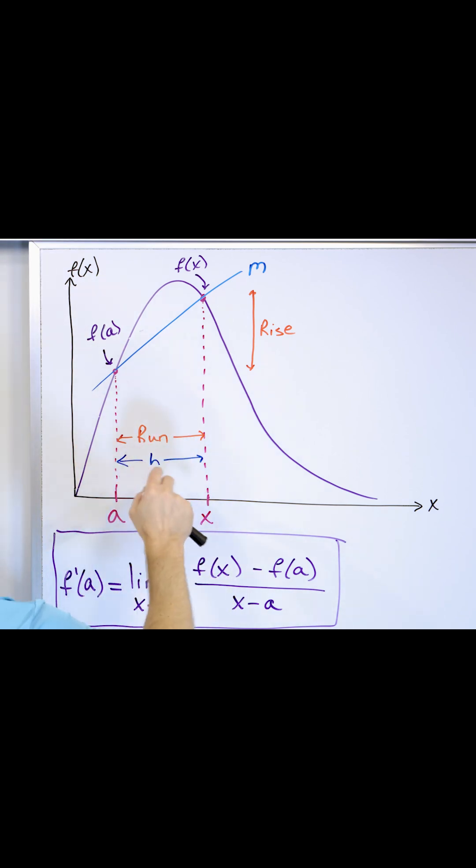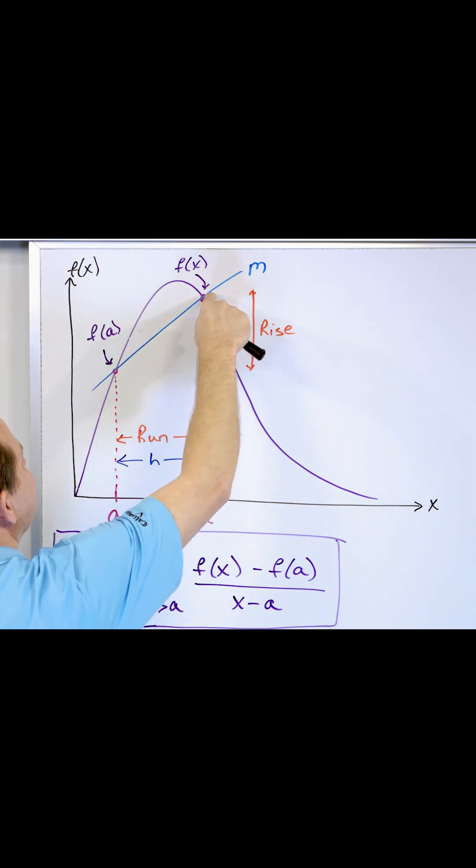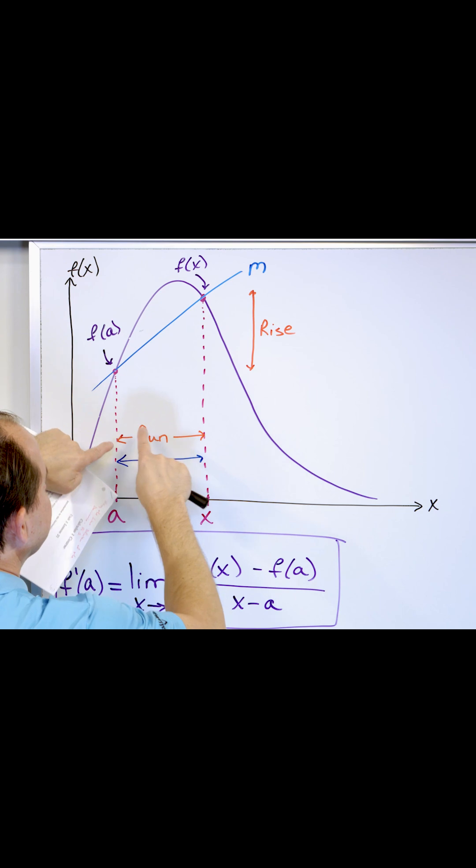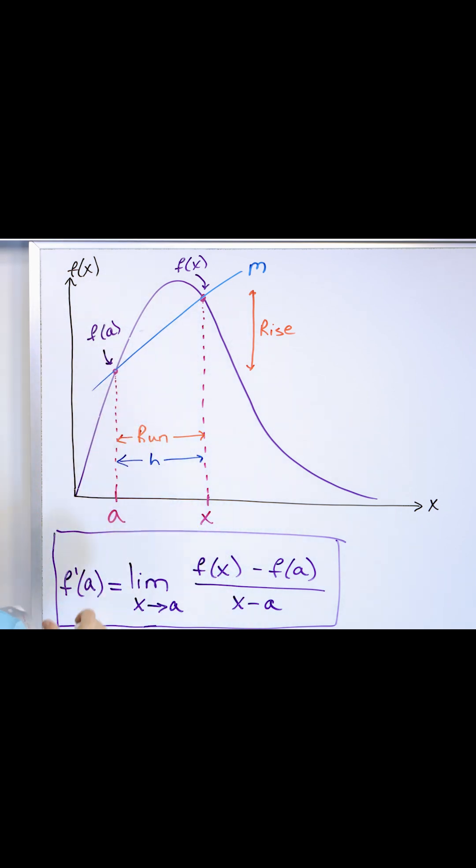And so what you do is you say, well, the rise is this y value minus this one, which is f of x minus f of a. That's just the vertical distance between the points divided by the horizontal distance x minus a. And so for these two points, that would be the slope of the line through them.